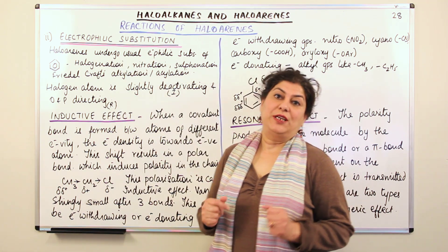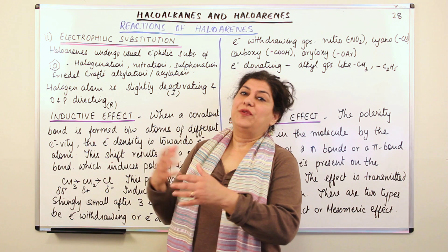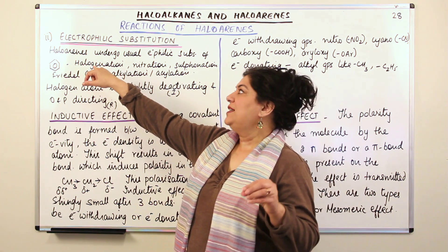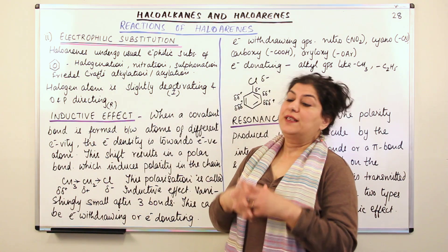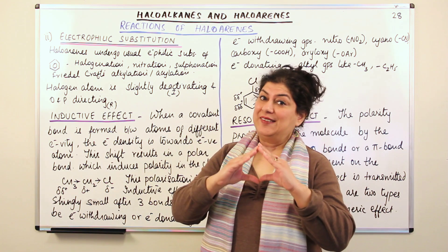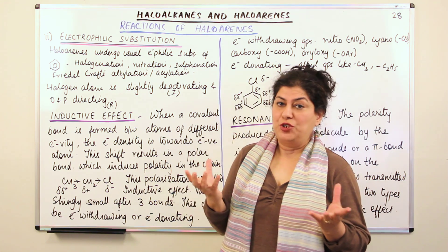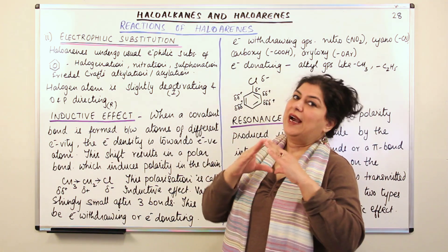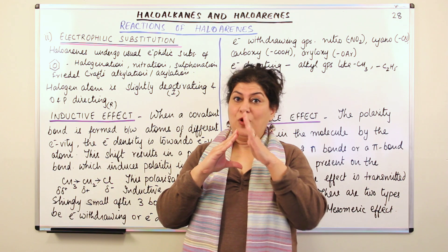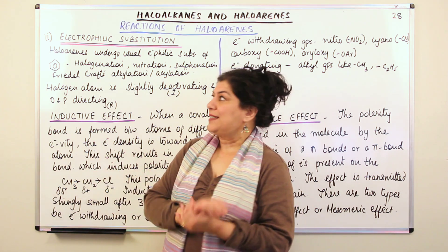You have studied about electrophilic substitution in class 11 with regard to a benzene ring. Just like the benzene ring, haloarenes also undergo electrophilic substitution of the ring. The electrophilic substitution takes place in the ring — for the hydrogens of the ring, they are usually the ones that are substituted. Even in the case of haloarenes, the electrophilic substitution is not going to substitute the halogen; it is going to substitute the hydrogens of the ring. Therefore, we say the substitution is taking place at the ring.